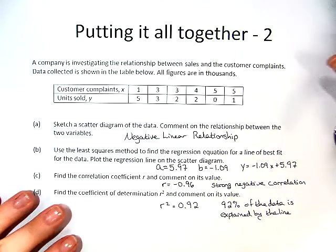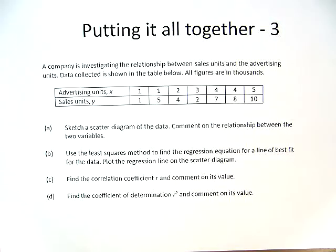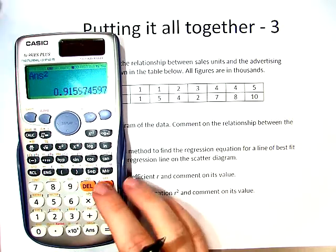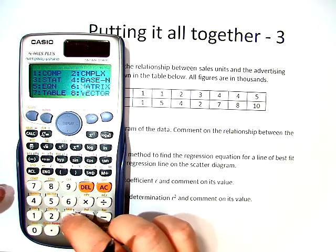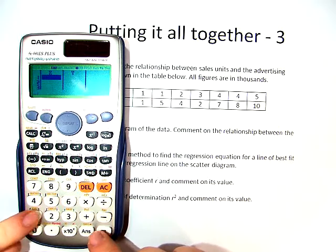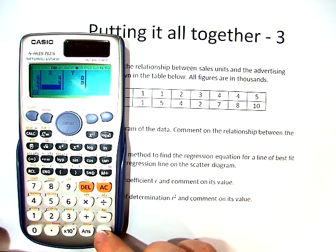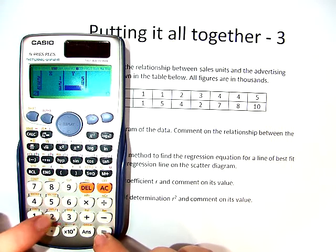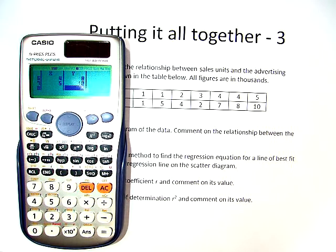Alright, let's try the other one which we didn't think had a very strong correlation earlier. Now we have x on top, y on the bottom. We know that we need to put it in, so we hit mode, stat, and once again a plus bx: 1, 1, 2, 3, 4, 4, 4, 5. Okay, let's go over: 1, 5, 4, 2, 7, 8, and 10. Everything matches up perfectly.